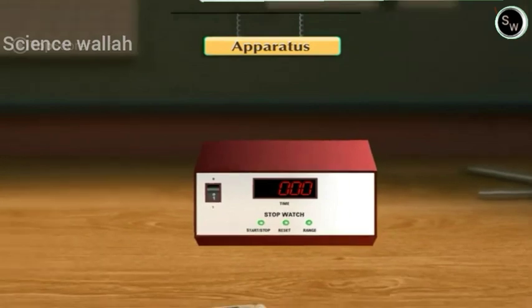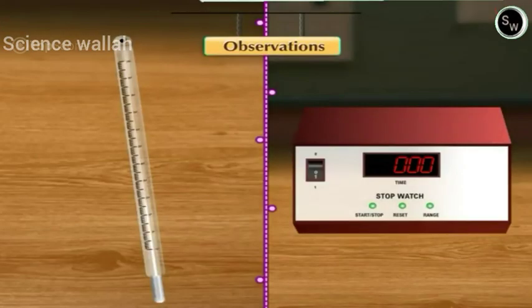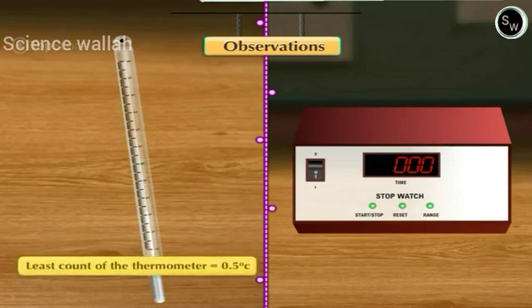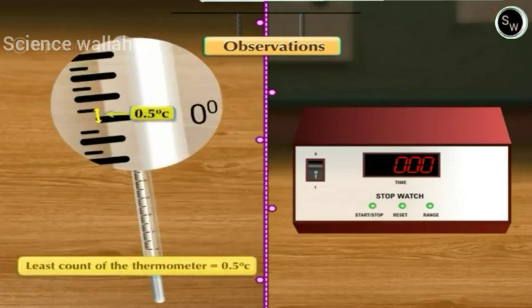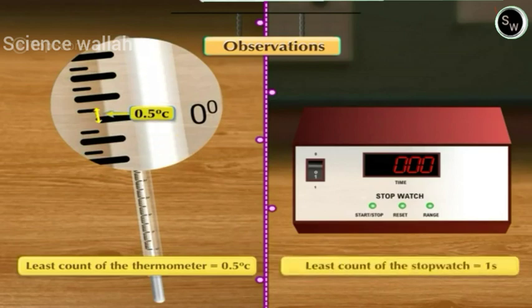Observations: Let us record the least counts of the thermometer and the stopwatch we are going to use. Least count of the thermometer is equal to 0.5 degrees Celsius. Least count of the stopwatch is equal to 1 second.